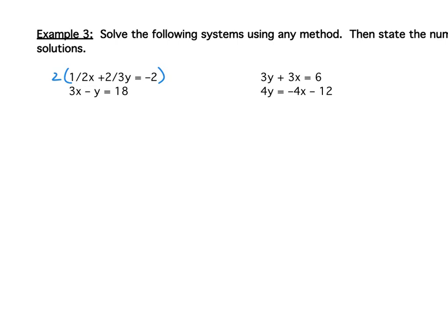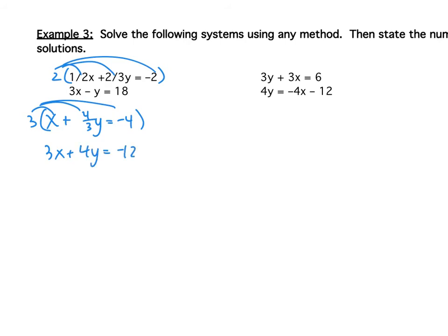For the top line, I'll multiply everything by 2. Two times one-half gives me just x. Two times two-thirds is four-thirds y, equals negative 4. I want to get rid of that four-thirds, so now I'll multiply by 3. When I do, I get 3x plus 4y equals negative 12. That's my first equation. I'll bring down the second equation to form my new system. I notice the numbers in front of the x are the same number, so I can multiply the top equation by negative 1 to get a positive 3x and a negative 3x.